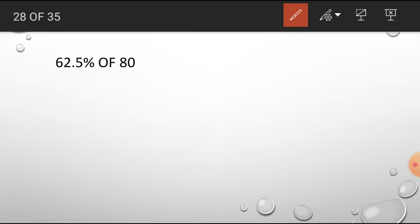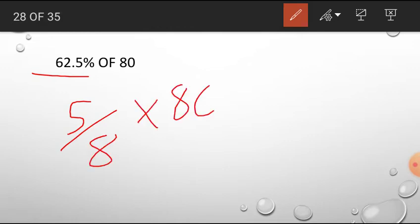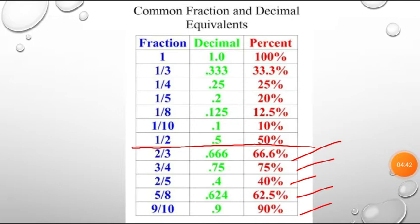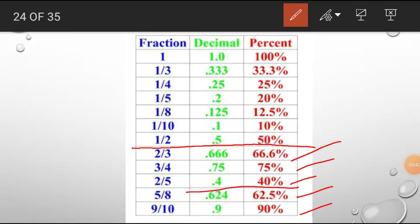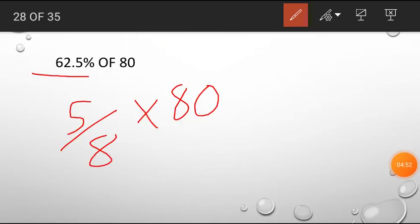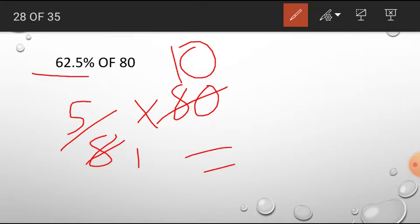And next problem, 62.5 percent of 80. 62.5 percent means 5 by 8 into 80. See here, 62.5 percent means 5 by 8, right? So here we take 62.5 percent means 5 by 8. Now solve this problem. In 8 table, 80 stands for 10 times and 8 one time, so the final answer is 50. 5 into 10, that is 50.